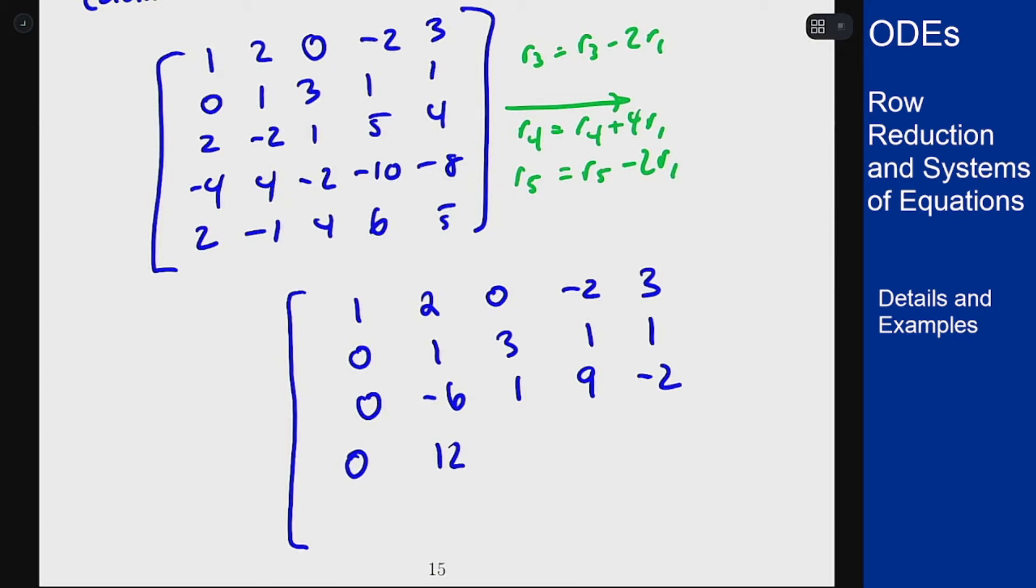Negative 2 plus 0 is negative 2. Negative 10 minus 8 is negative 18. And negative 8 plus 12 is 4.